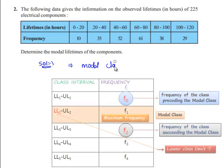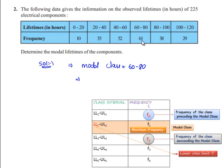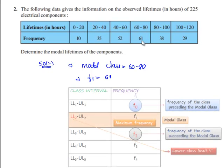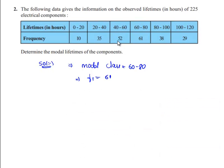Modal class is 60-80 and the corresponding frequency, the maximum frequency, is the frequency of the modal class F1, which is 61. The preceding frequency of the modal class is 40-60 with corresponding frequency F0 equals 52. And the succeeding frequency F2 is 38.